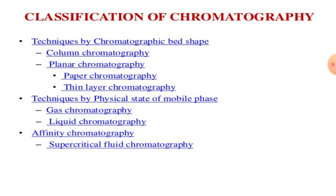Classification of chromatography: there are three main types. First, techniques by chromatographic bed shape, which include column chromatography and planar chromatography — paper chromatography and thin layer chromatography. Second, techniques by physical state of mobile phase, which include gas chromatography and liquid chromatography. Third is affinity chromatography, which includes supercritical fluid chromatography.